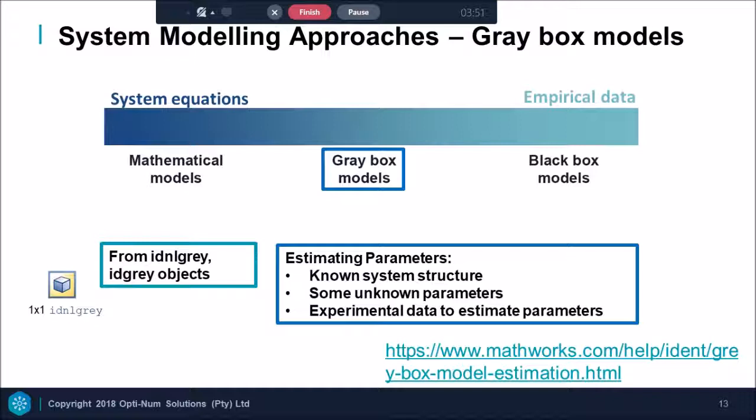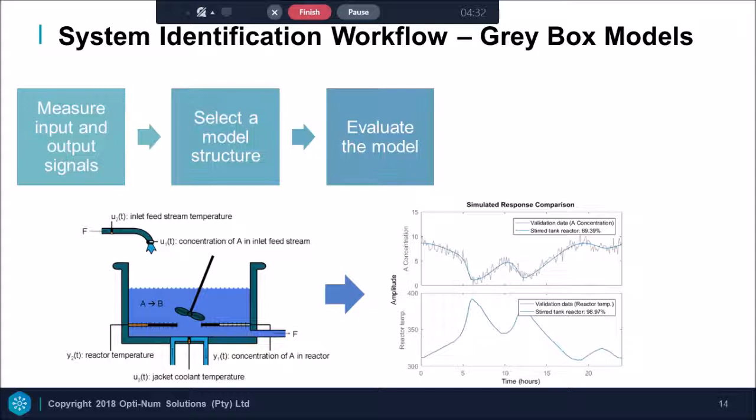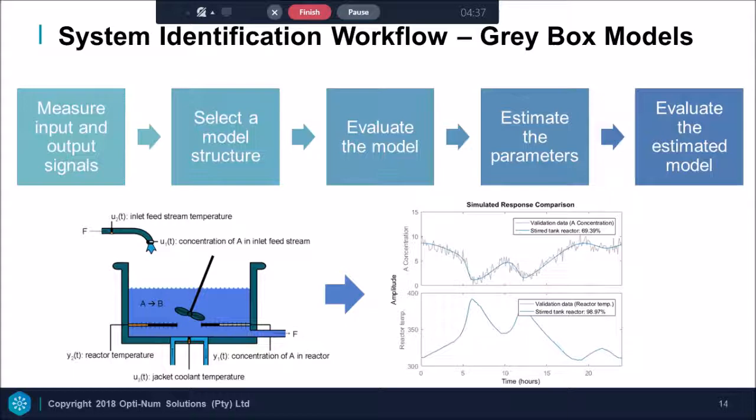Our main focus will be on grey box models. As the name implies, we know what the design equations are, but we do not know how accurate our initial parameters are. The advantage of this approach is that you can connect your understanding of the nature of the plant to your model. So we measure our input and output signals on a physical plant. Then we select a model structure and evaluate the model. Then we estimate the parameters and evaluate the estimated model.